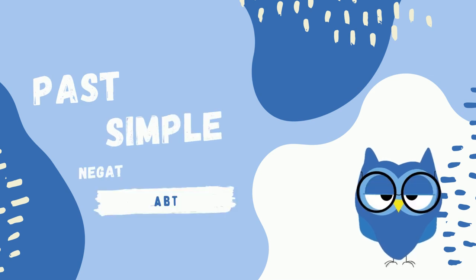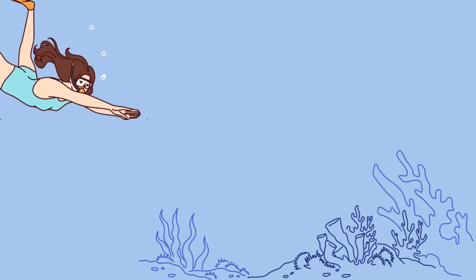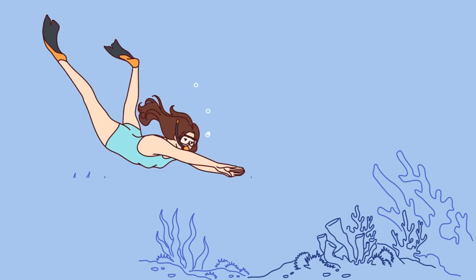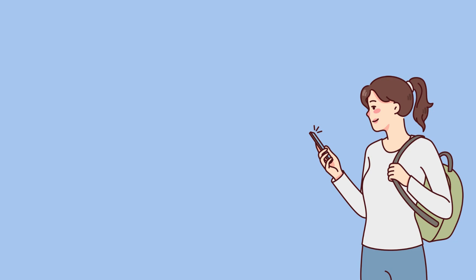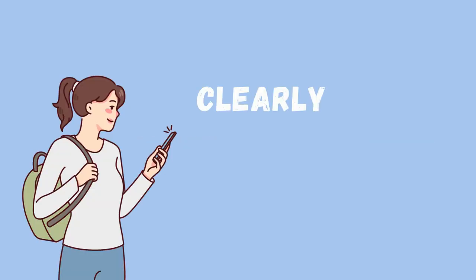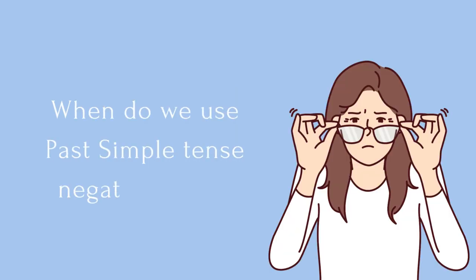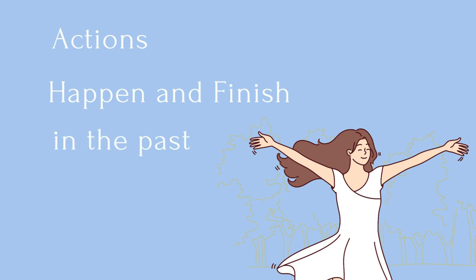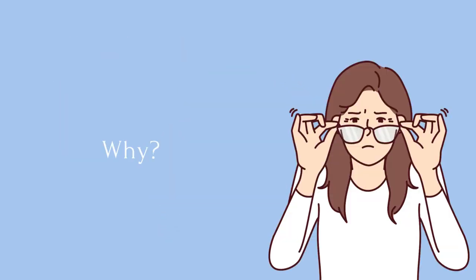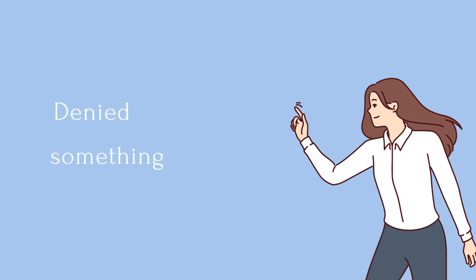Past simple tense: negative and question form. Hey everyone, today we're delving into the world of past simple tense, specifically focusing on those tricky negatives and questions. When do we use past simple tense negatives and questions? We use them to talk about actions that happened and finished in the past — but with a twist — because we want to deny something that happened.